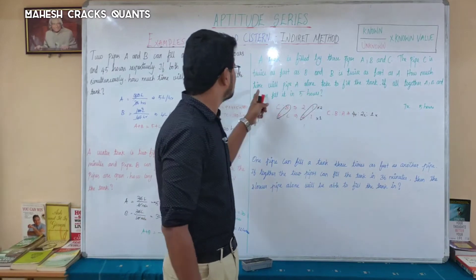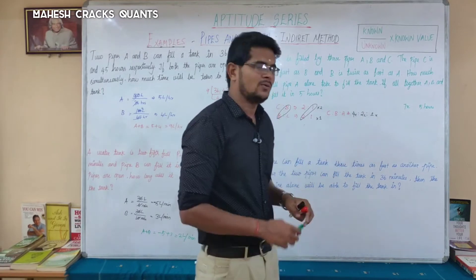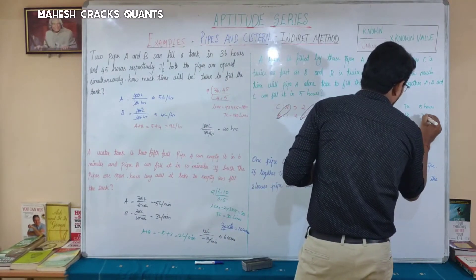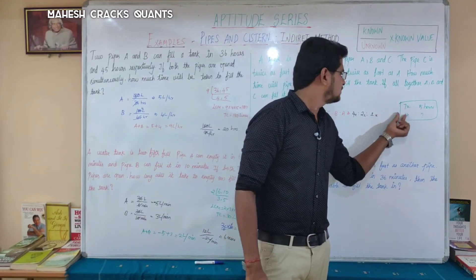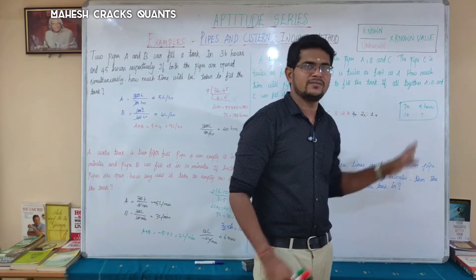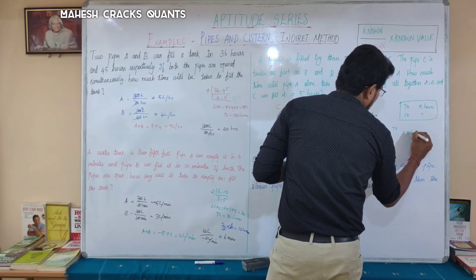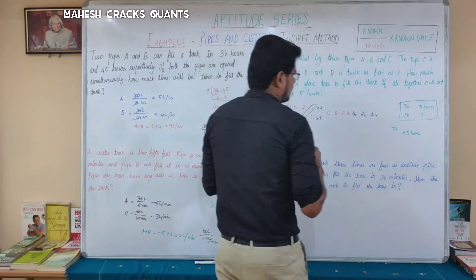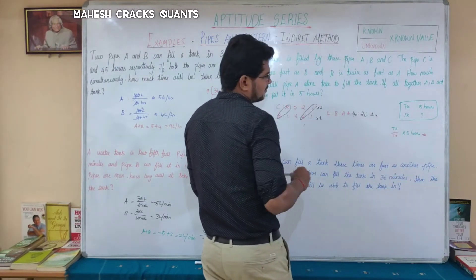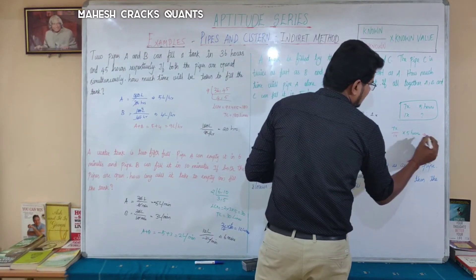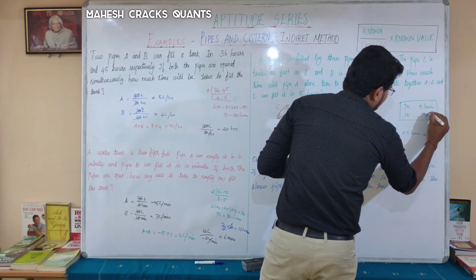The question asks how much time pipe A alone takes. A has speed 1x. Since 7x fills the tank in 5 hours, for 1x the time = 7 × 5 = 35 hours. So pipe A alone takes 35 hours to fill the tank.